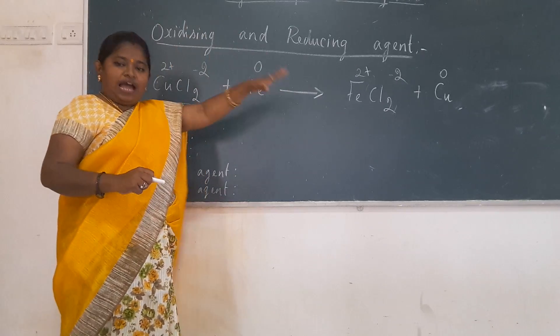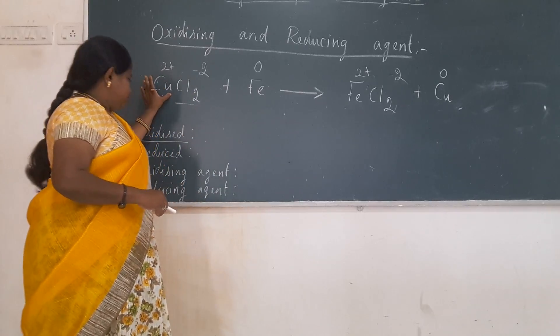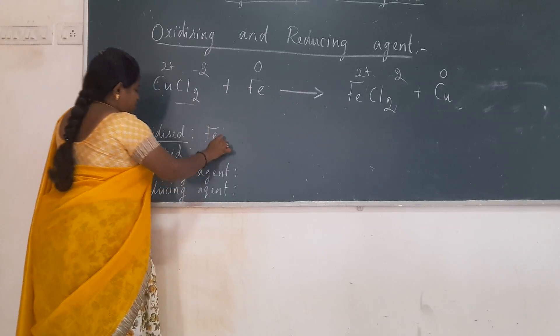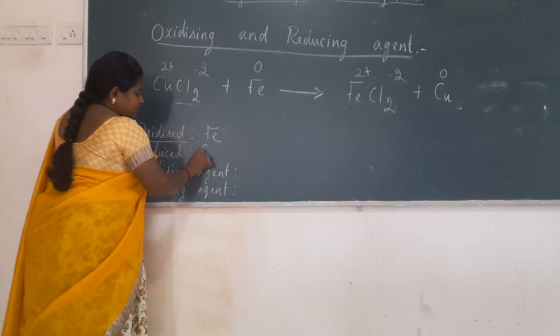So ion to atom, this gains electron. So which is oxidized over here, oxidized is iron. And the reduced one is copper.